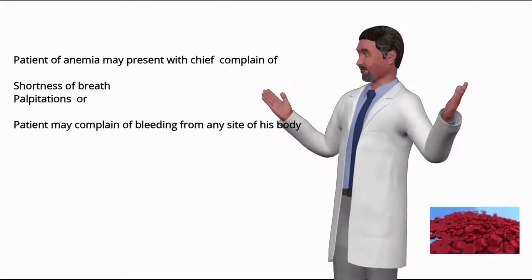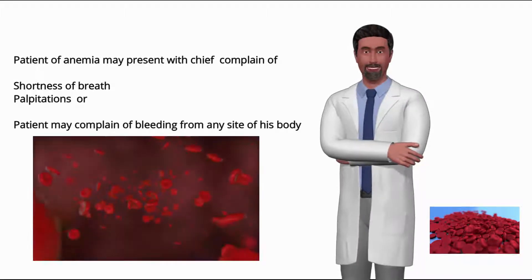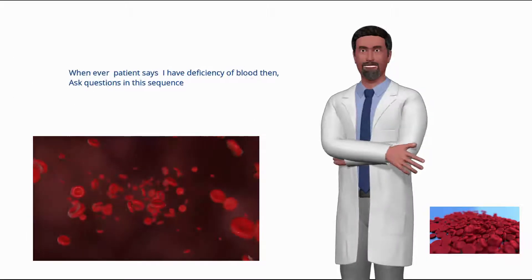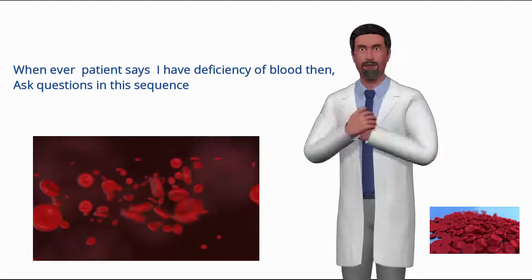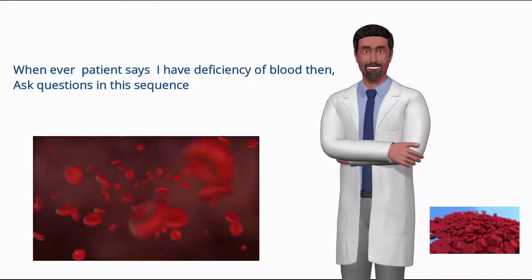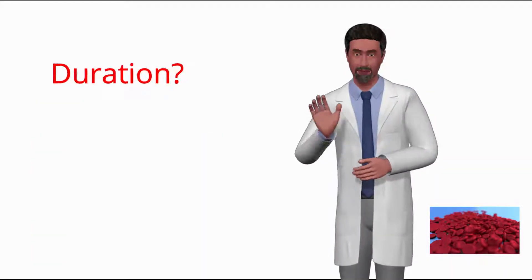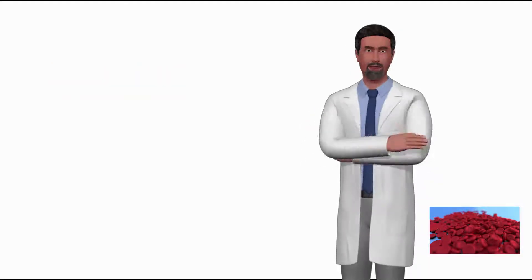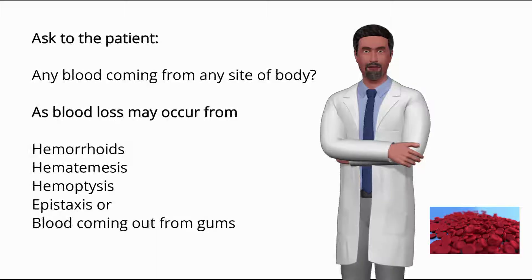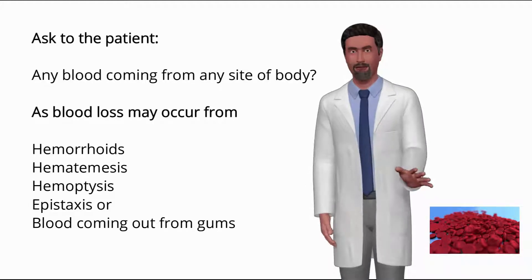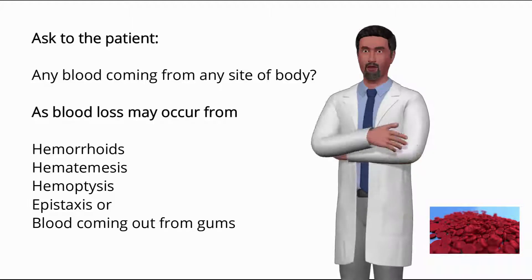You should be ready to handle your case of anemia and focus on the presenting complaint. Whenever a patient says 'I have deficiency of blood,' ask questions in this sequence: first, ask about duration of disease. Then ask: is there any blood coming from any site of the body? Blood loss may occur from hemorrhoids, hematemesis, hemoptysis, epistaxis, or blood may come from the gums.